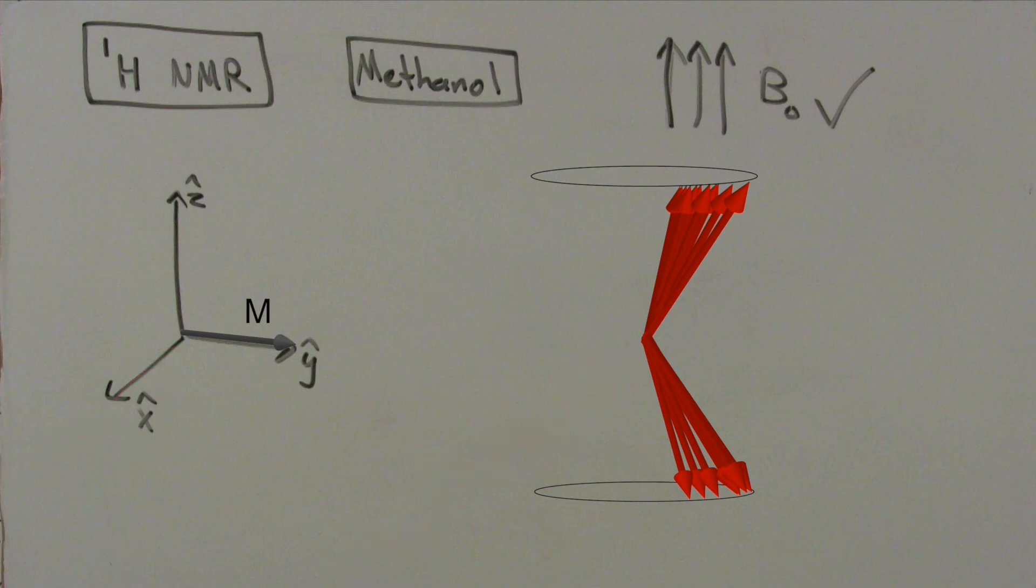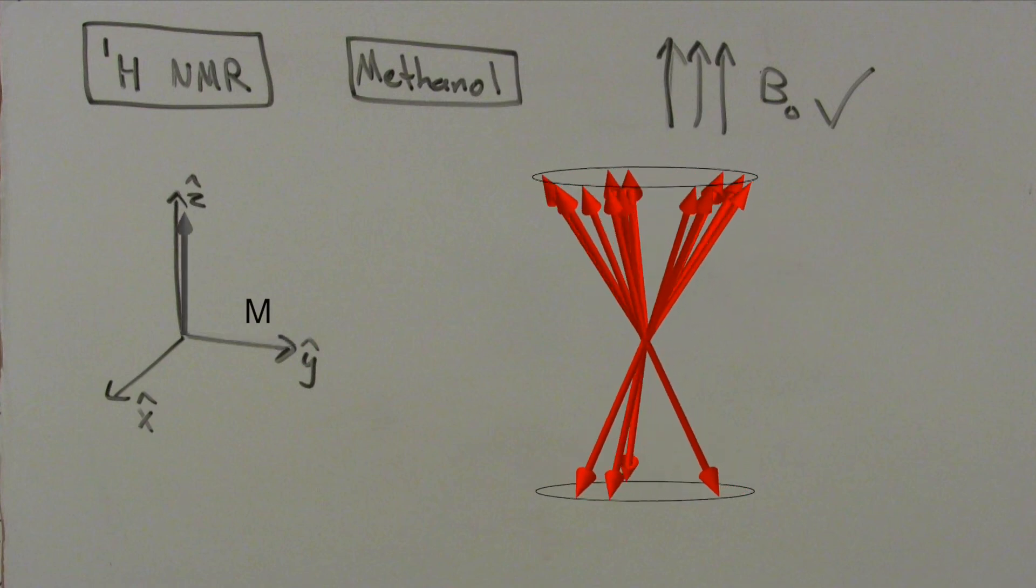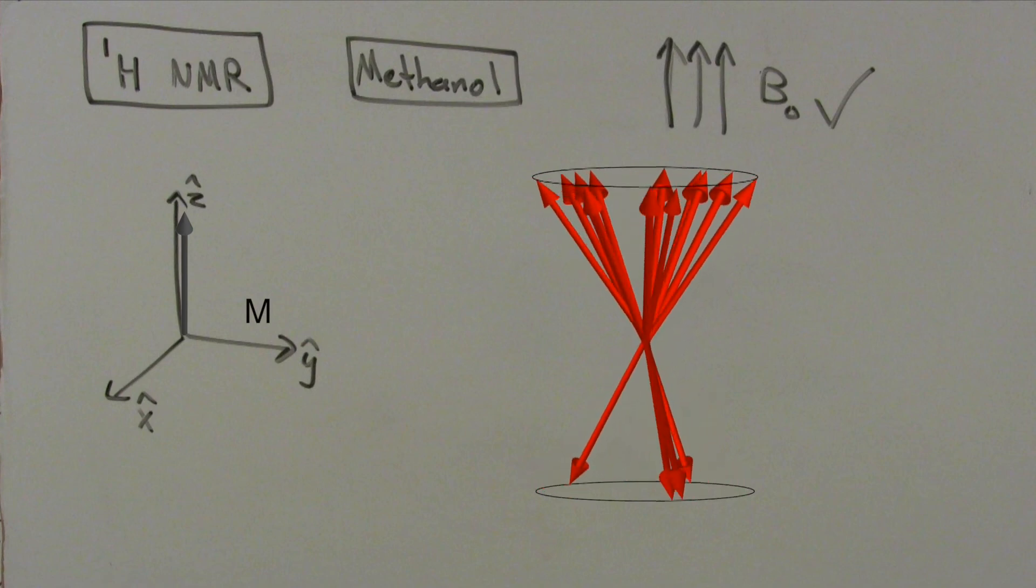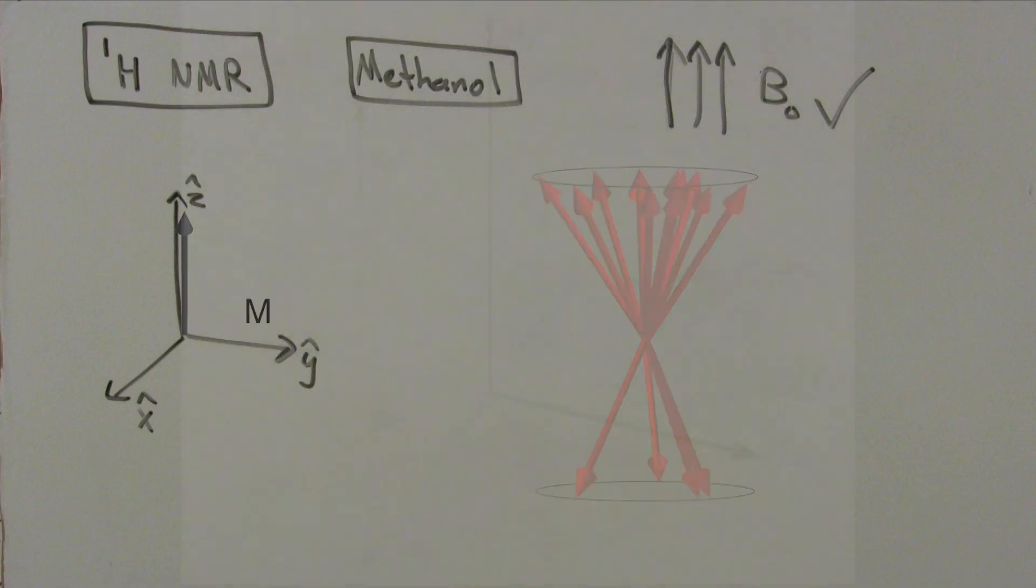After that pulse, the nuclei dissipate that energy. The nuclei resume precession, and some nuclei that were in the down spin state relax back to the up spin state. The dipole vector will now return to the equilibrium position, pointing in the positive z-hat direction. However, the path the vector takes looks like this.